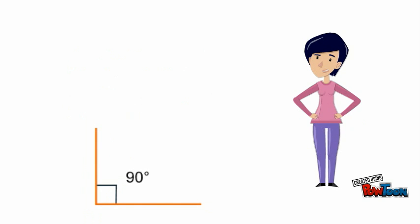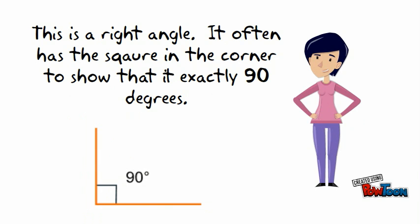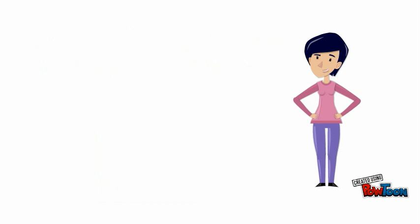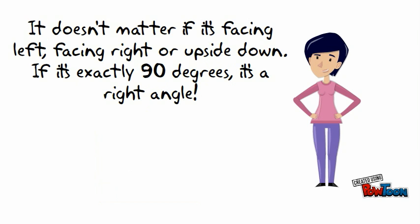This is a right angle. It often has the square in the corner to show that it is exactly 90 degrees. It doesn't matter if it is facing left, facing right, or upside down. If it's exactly 90 degrees, it's a right angle.